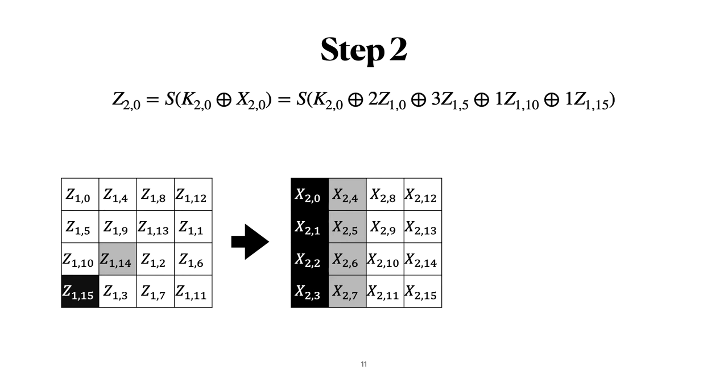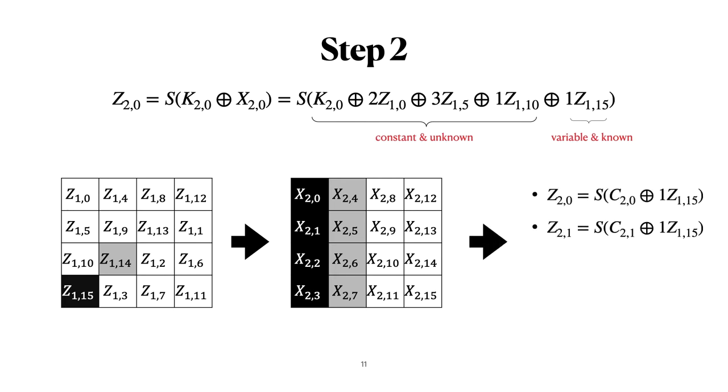We can express x to 0 with the mixed columns equations. Now one of those bytes, byte 15, is known and constantly varying. The other ones are unknown, but luckily they're also constant because they are white squares. So that means that we can consider them together with the unknown key bytes as one constant of 8 bits. That means that we can use a DPA attack with 2 to the 8 hypothesis to recover one constant for each byte of this column.